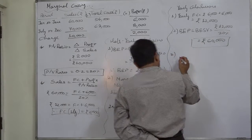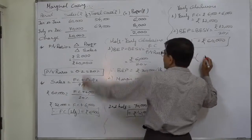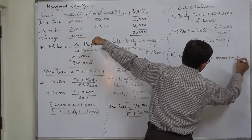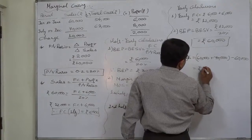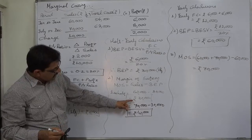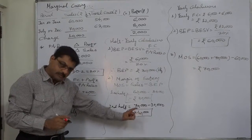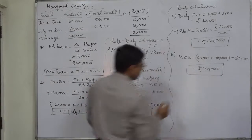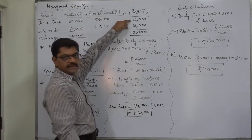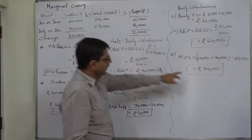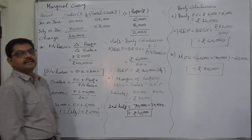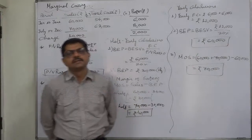That affects the margin of safety. Yearly sales: 60,000 for the first half plus 70,000 for the second half, minus the yearly BEP of 60,000, gives margin of safety of rupees 70,000 for the whole year. This can be reconciled as 30,000 for the first half plus 40,000 for the second half. Yearly profit is 6,000 plus 8,000 equals 14,000, and 70,000 at 20% also gives rupees 14,000.